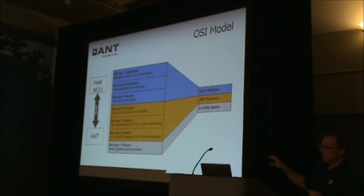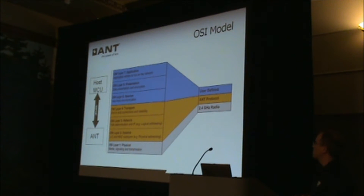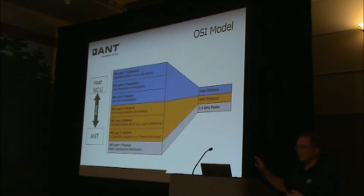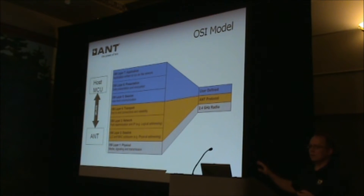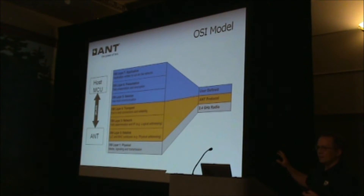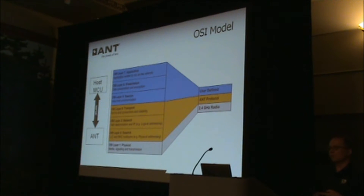Your host application microprocessor needs to implement the upper three layers — that includes your application, presentation, and session layers. The key point is that the application MCU layer is really thin and lightweight. A lot of the actual networking — actually all of the networking — is done by the ANT chip, which means you can use very simple processors without worrying about those details.